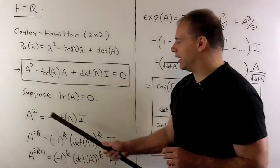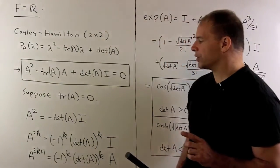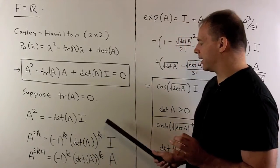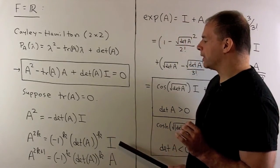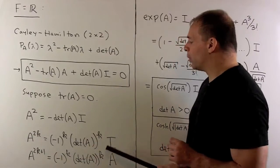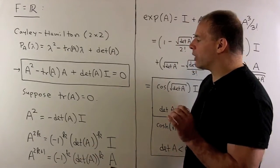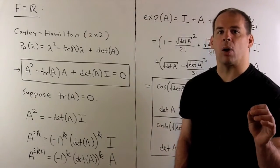I can raise each side to powers. So we'll get A to an even power equals minus one to the K, determinant of A to the K times I. And then if I multiply this by A, we'll have the same coefficient but times A. So we know how to raise A to both even and odd powers.